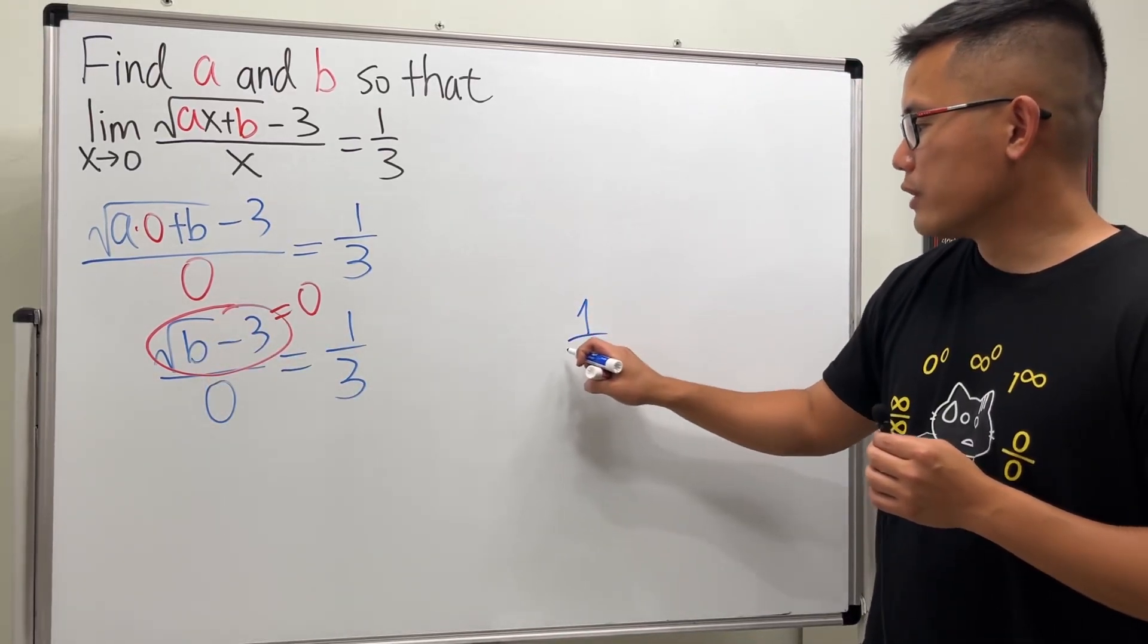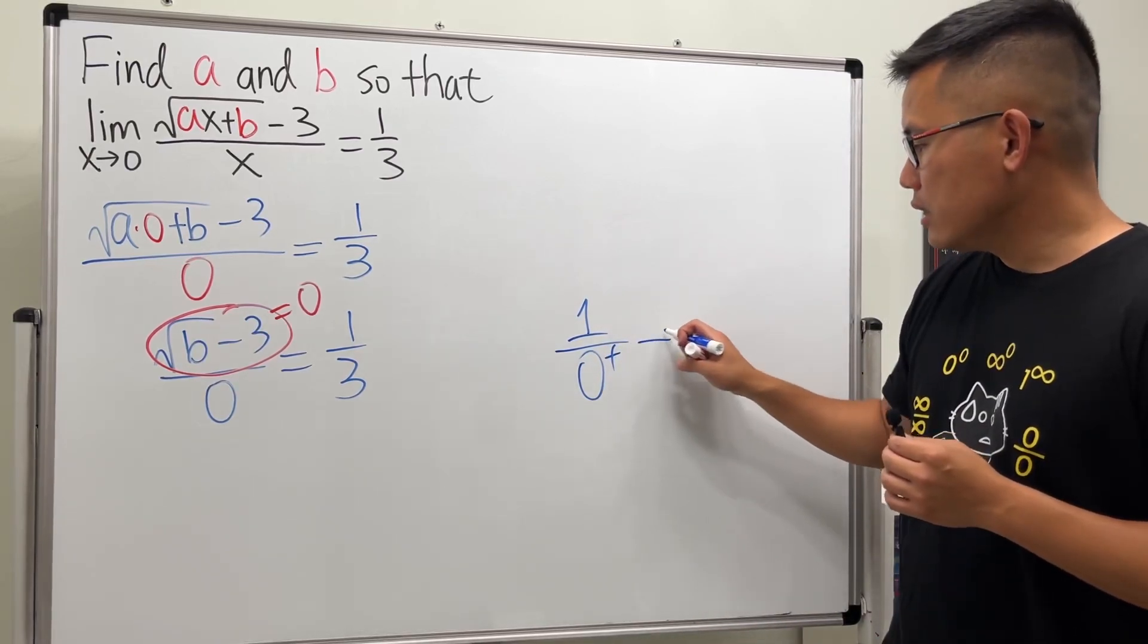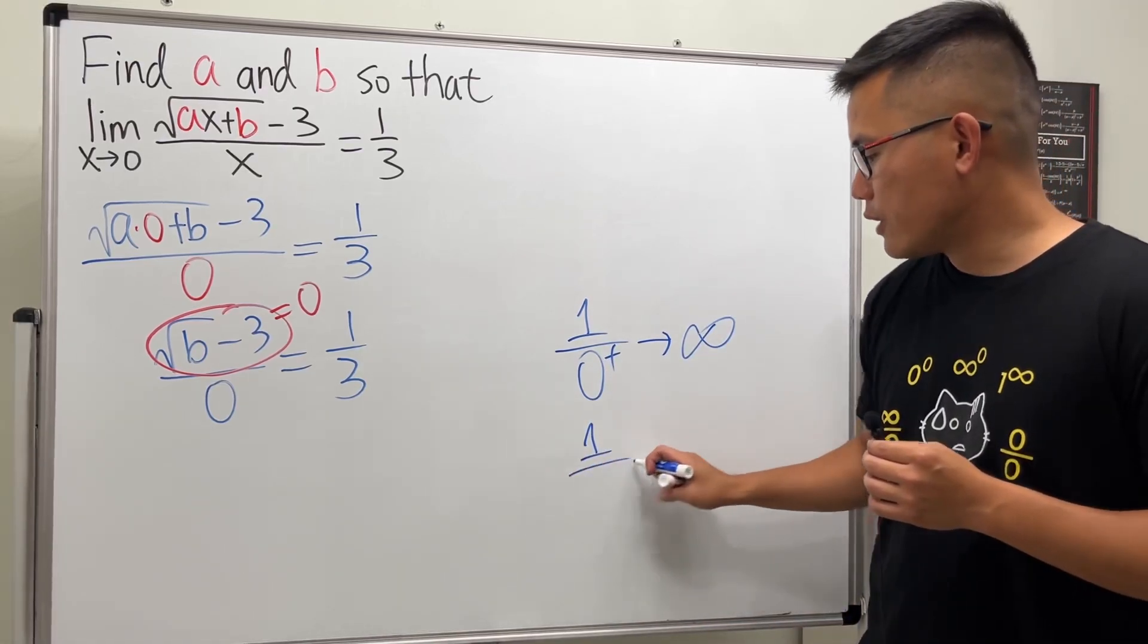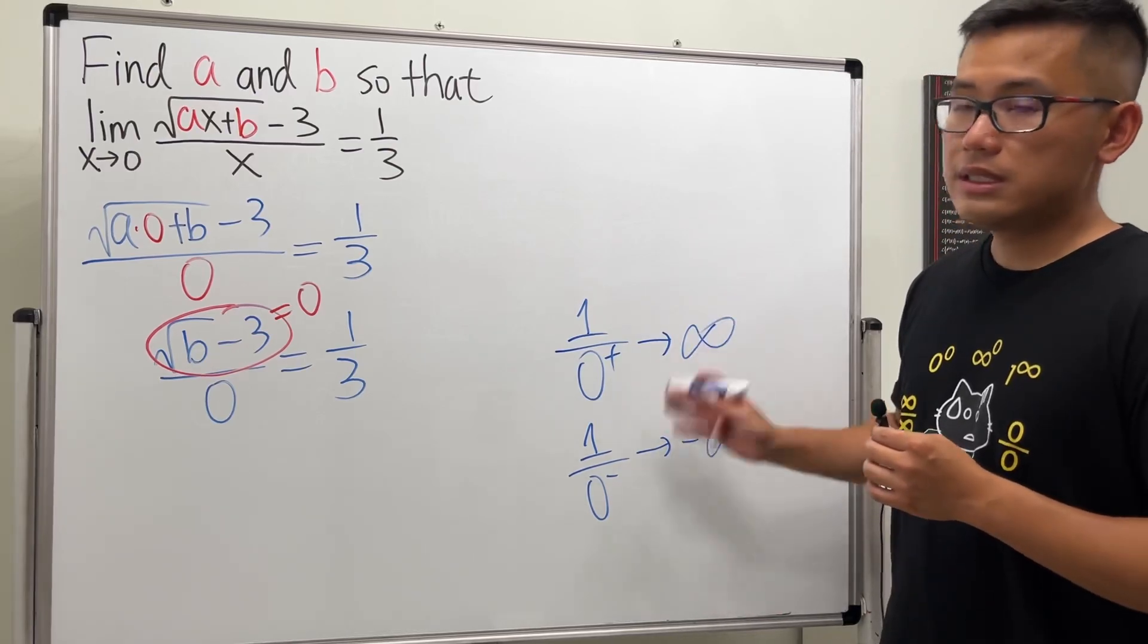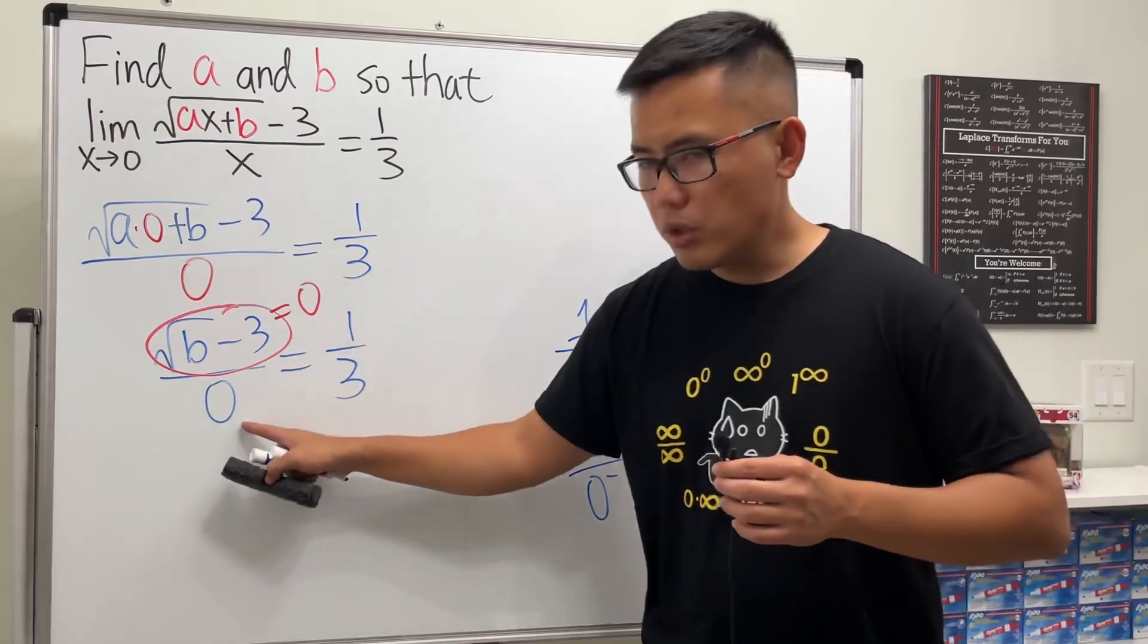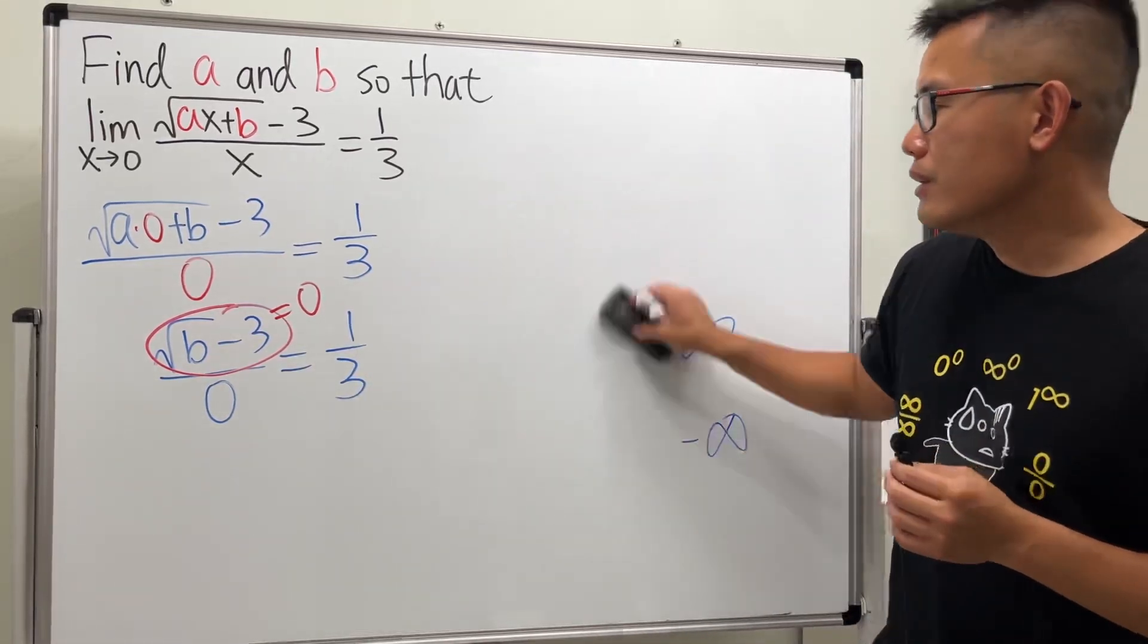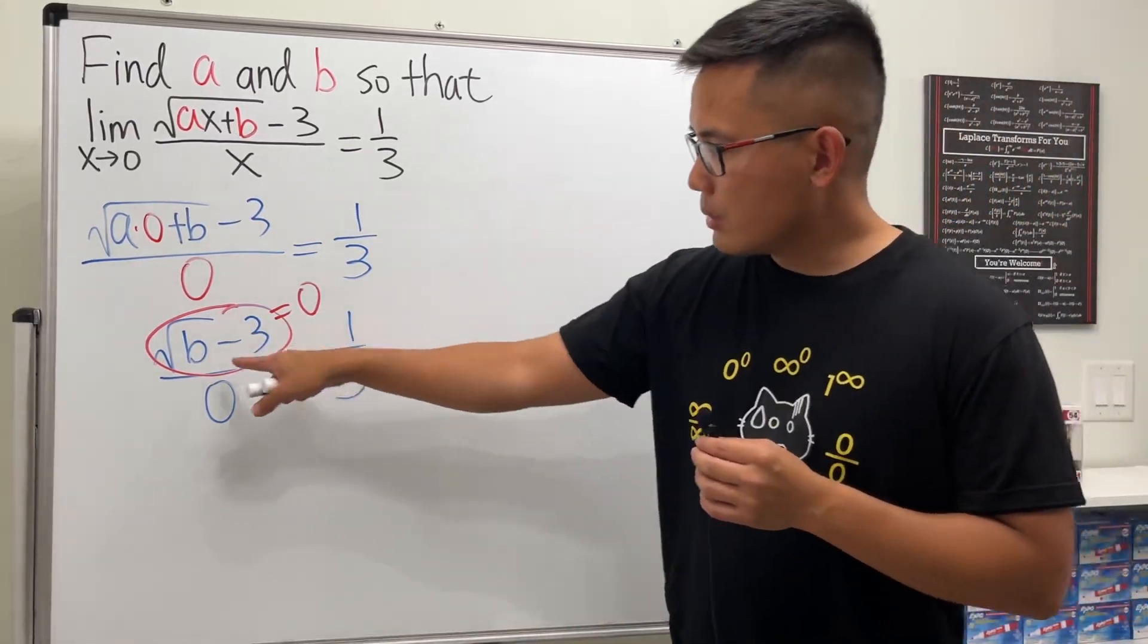If you have one over zero like so, and let's say you have a zero plus, this right here goes to positive infinity. If you have one over zero minus, this right here goes to negative infinity. So these are the limit kind of things that you can draw conclusions about. But when you have zero over zero, the cat is saying that no, it's indeterminate, but it's possible to be one third.